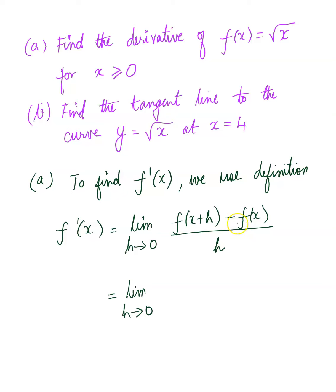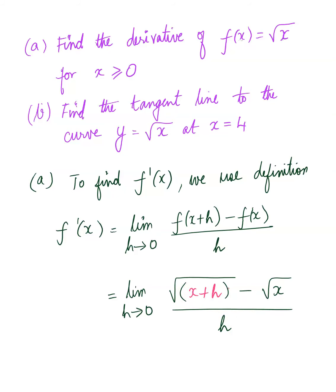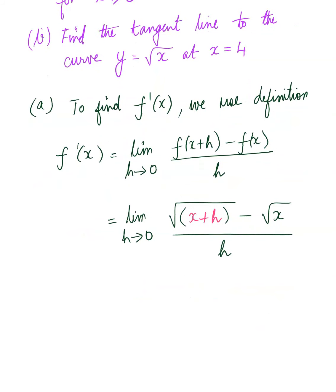So f of x plus h — we have f of x given to be square root of x, so in the place of x, I plug in x plus h. Wherever x occurs, I'll have x plus h, so I'm going to put parentheses under the radical and insert x plus h inside the radical. If I plug in 0, we're going to have 0 in the denominator and there's no way to factor out the h. So the algebraic move to handle radicals stuck like this is the conjugate technique. We will multiply up and down by the conjugate of the numerator.